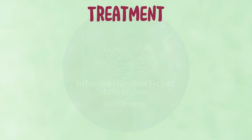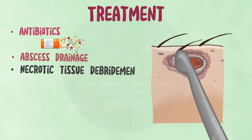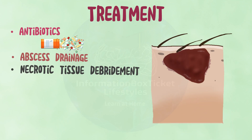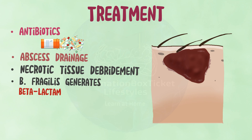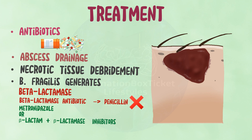Bacteroides fragilis infections are treated with antibiotics and either abscess drainage or necrotic tissue debridement. However, because Bacteroides fragilis generates beta-lactamase, beta-lactam antibiotics such as penicillin cannot be utilized. Instead, metronidazole, or a combination of beta-lactam and beta-lactamase inhibitors such as ampicillin and sulbactam, are effective.